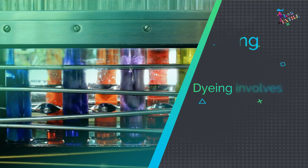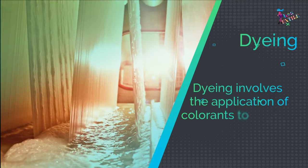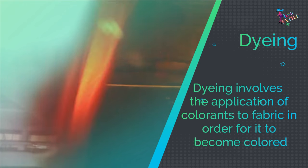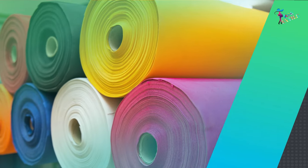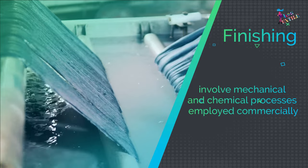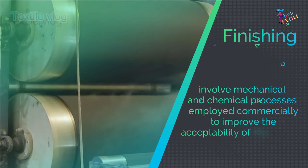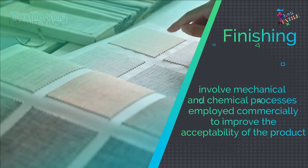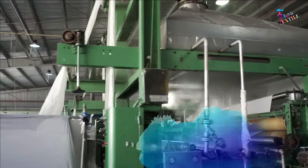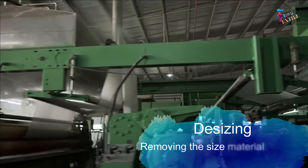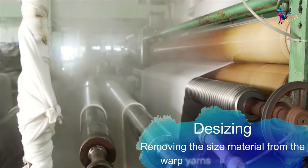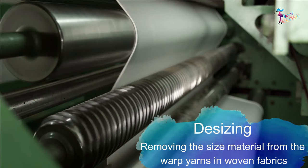Wet processing is a process used for dyeing and finishing fabrics. Dyeing involves the application of colorants to fabric in order for it to become colored. Finishing may involve mechanical and chemical processes employed commercially to improve the acceptability of the product. Desizing is the process of removing the size material from the warp yarns in woven fabrics.